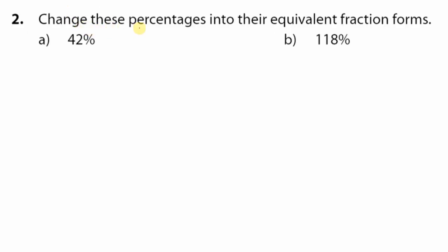Now number 2, now we are given the percentages and we need to change this into the fraction form, equivalent fraction form. For number A, we are given 42%, but now we know the definition of percentage means it's something over 100. And now it's simply a matter of simplifying. So 2 can definitely go into 42 and in 100. So let's see, 2 goes into 42, 21. 2 goes into 100, 50 times.